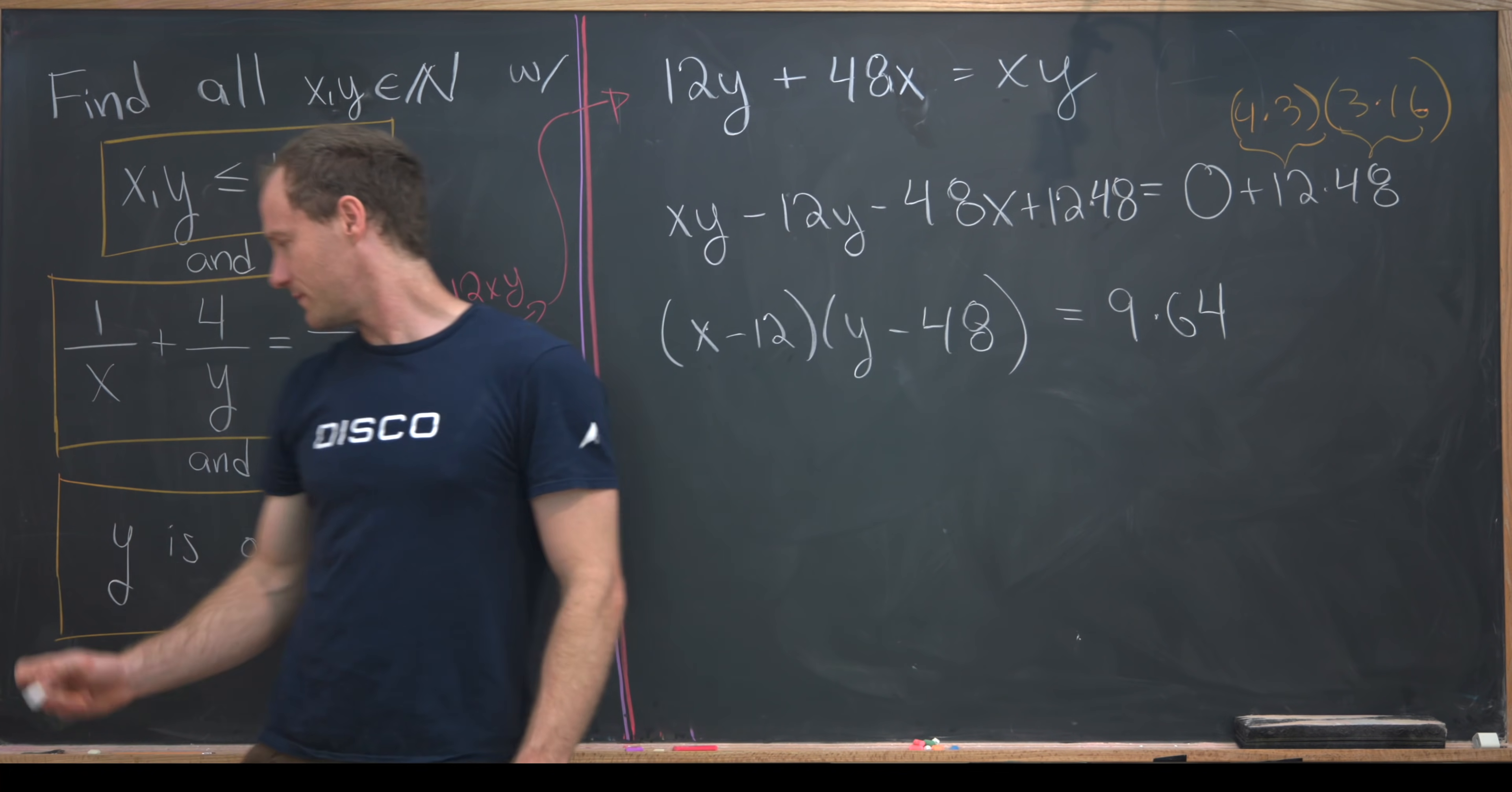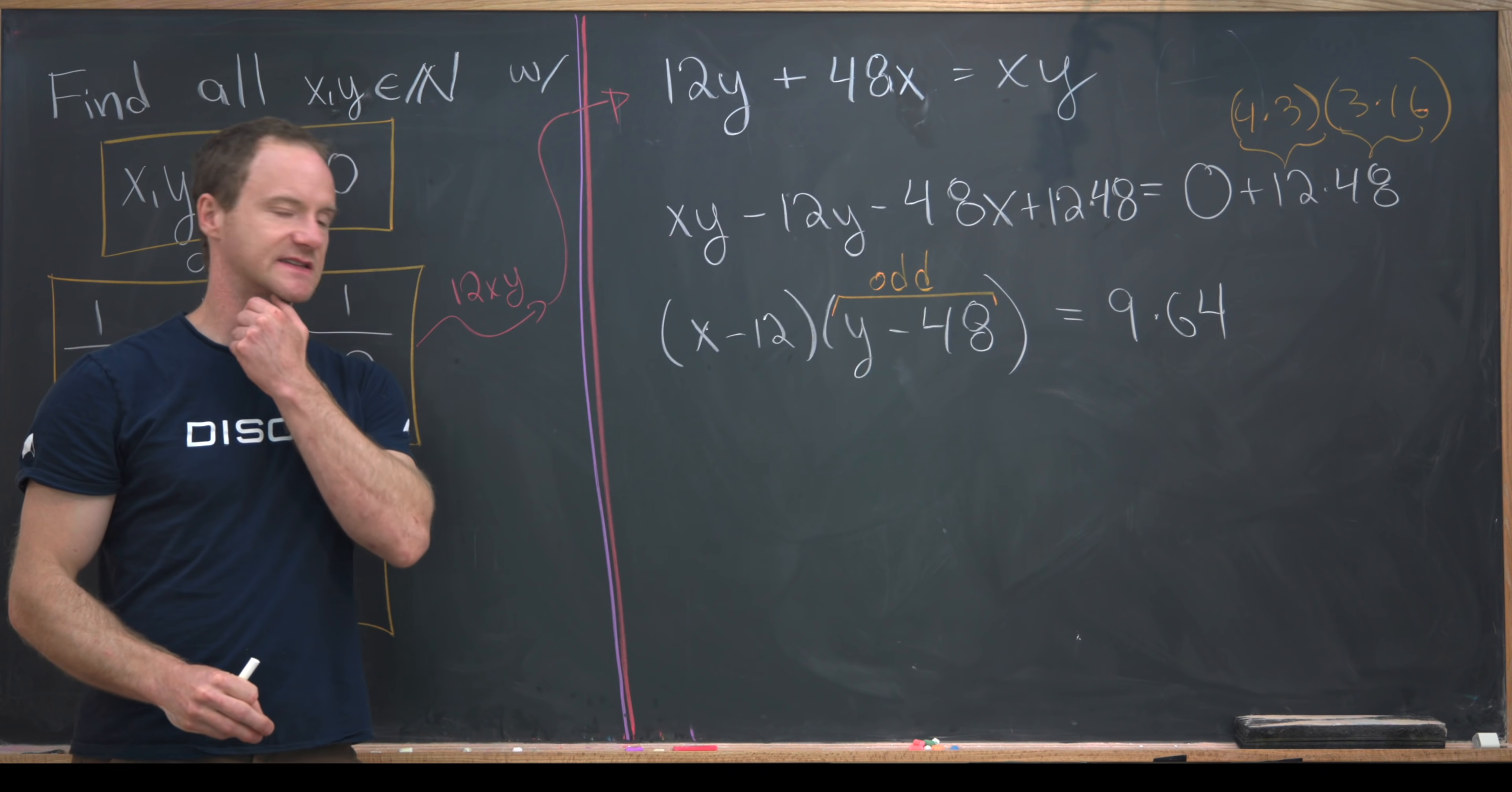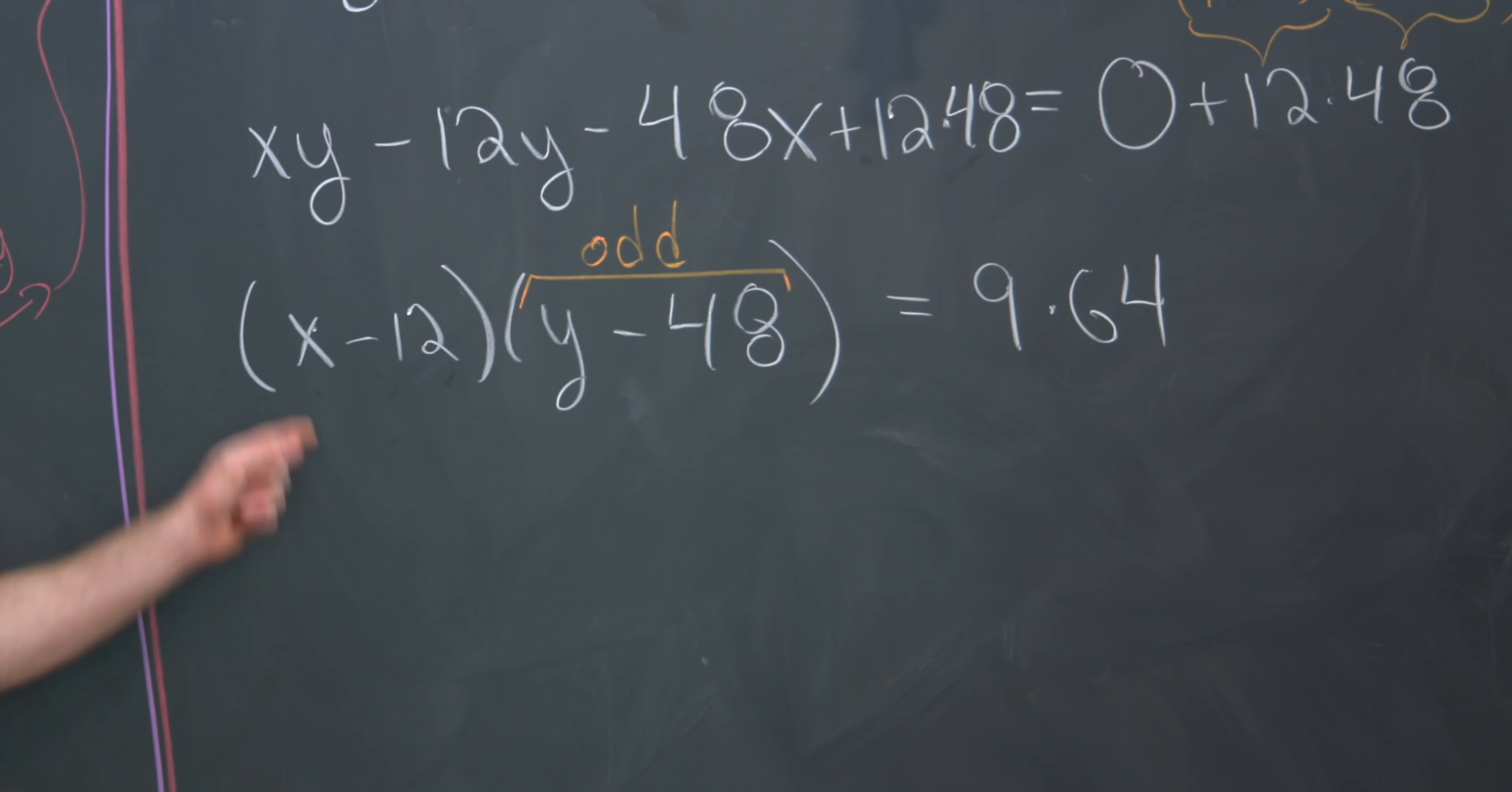So that means we could write this whole thing as 9 times 64. Now we know that y must be odd. But if y is odd, then 48 minus y is also odd. But the fact that everything over here on this left-hand side is a natural number or at least an integer, that means that each of these terms must be factors of this 9 times 64.